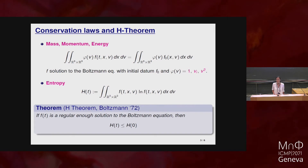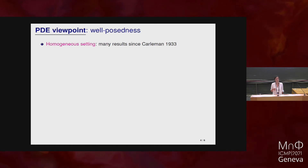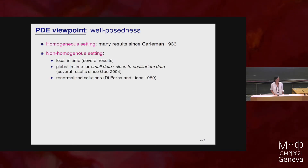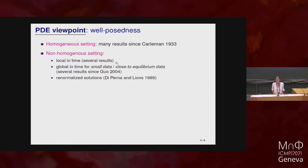This means your initial Boltzmann entropy bounds the entropy at all later times. In particular, this tells us that the Boltzmann equation describes time-irreversible phenomena, despite being obtained from a microscopic system of time-reversible dynamics. Let me focus on a PDE viewpoint — about well-posedness. In the homogeneous setting where the unknown f just depends on velocity, there are many results following the pioneering work of Carleman in 1933, and the situation is quite well understood.